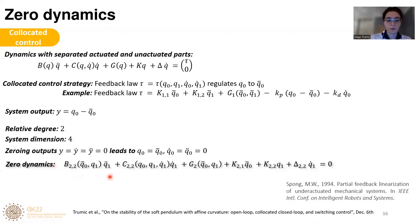The zero dynamics equation is obtained by zeroing the output and its higher derivatives. At this point, I would like to recall the theorem from the work of Spong that says that if you want to analyze the stability of the overall underactuated system, we can separate it with the analysis of the collocated part and the analysis of zero-dynamic stability. We will assume that our collocated control strategy gives us a stable collocated part of the system. Therefore, the stability of the overall system depends on zero-dynamic stability. In the next slides, we will examine exactly the zero-dynamic stability.